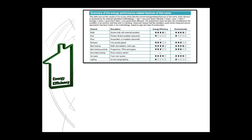Next, on the second page of the EPC, you will find a summary of the energy-related features of the dwelling. This table is generated from the survey information entered into the software and breaks the dwelling into individual elements, issuing a star rating out of five based on how these elements are currently performing in terms of both energy efficiency and environmental impact. This table offers a further visual representation of the current rating of the dwelling before any improvement works are carried out.